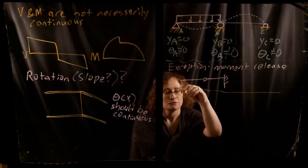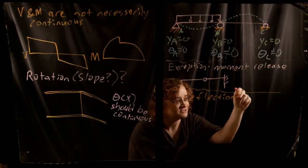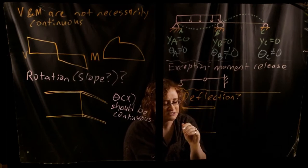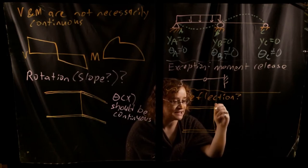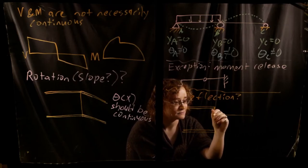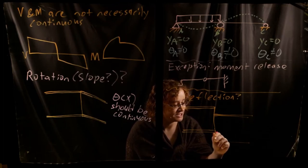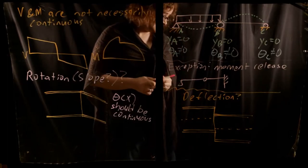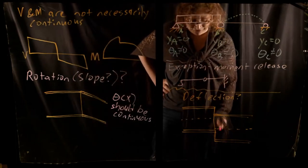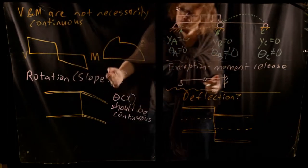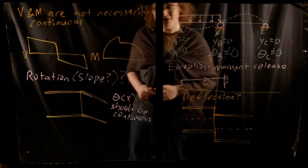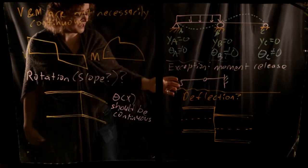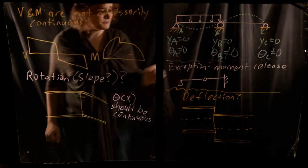What about deflection? Here there really aren't going to be any exceptions — not even at a moment release. If deflection were to undergo a jump, that would mean the beam has fractured — you would have a sudden drop in the neutral axis, meaning the beam has literally broken in half. So even though moment and shear can be discontinuous, your deflection absolutely has to be a continuous function. Your rotation generally will be too, unless you have a moment release.